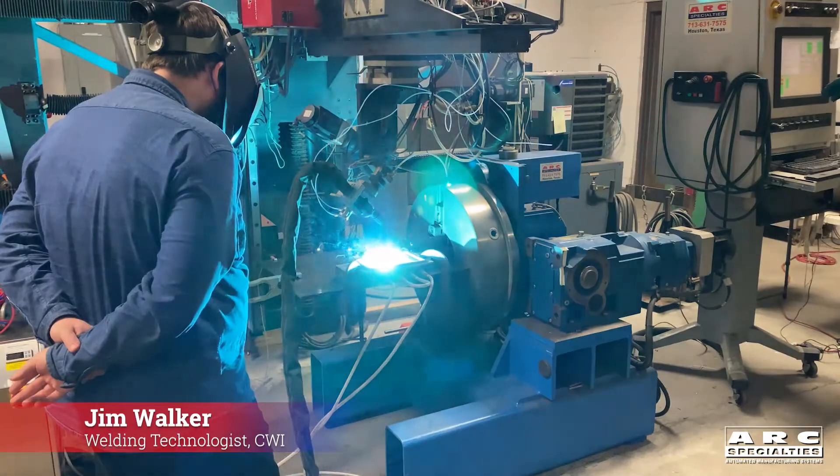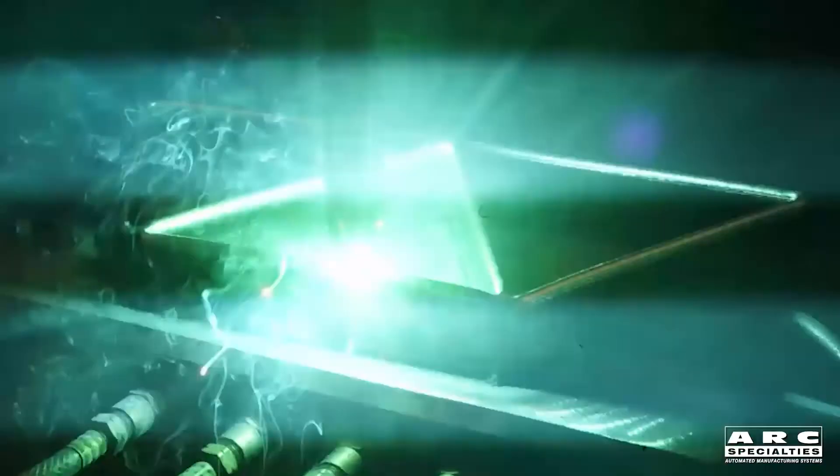This makes sense. We're putting down about three pounds per hour with gas metal arc. One thing we've learned from additive manufacturing of aluminum is faster is actually better.